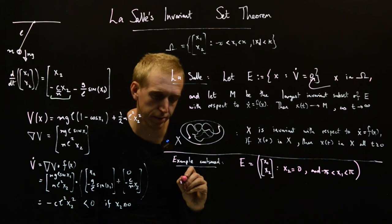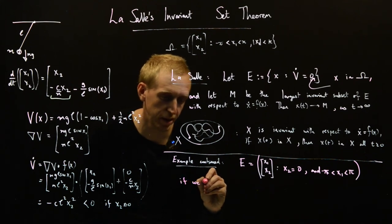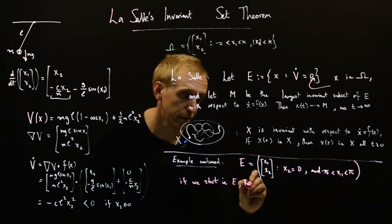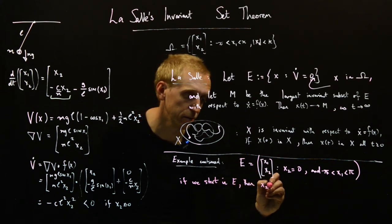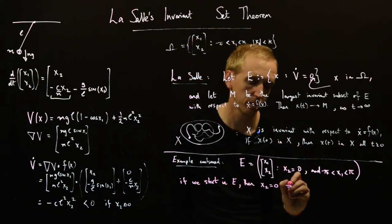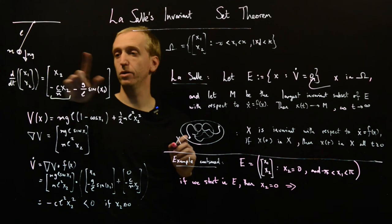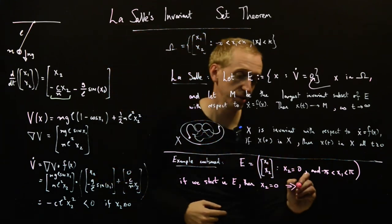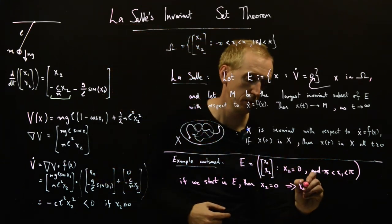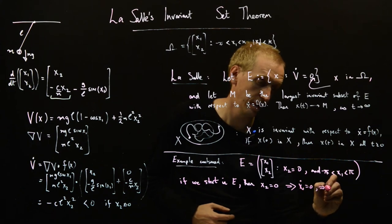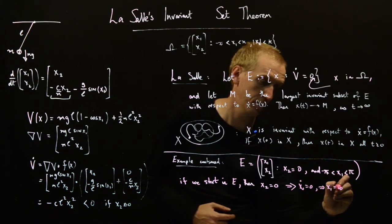And so what does this imply? So we look at our dynamical equations here. If x2 is equal to zero, then x1 dot is equal to zero. And so x1 is equal to some constant.